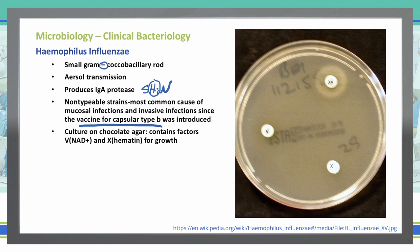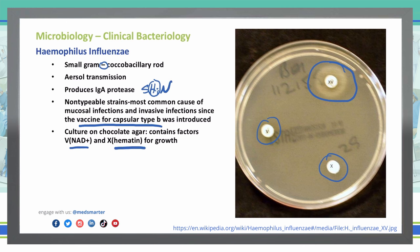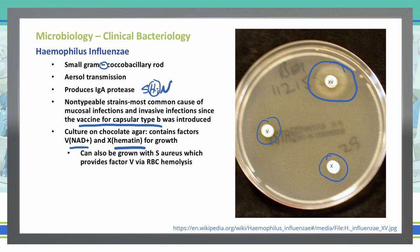These bacteria grow very well on chocolate agar. Chocolate agar has factor V and factor X on it. Haemophilus influenzae requires both factor V and factor X to grow — you can see in this picture that the disc containing both factors allows bacterial growth, while the individual factor discs do not. Factor V is NAD+ and factor X is hematin. You can also grow this with Staph aureus, which provides factor V (NAD+) through hemolysis of red blood cells.